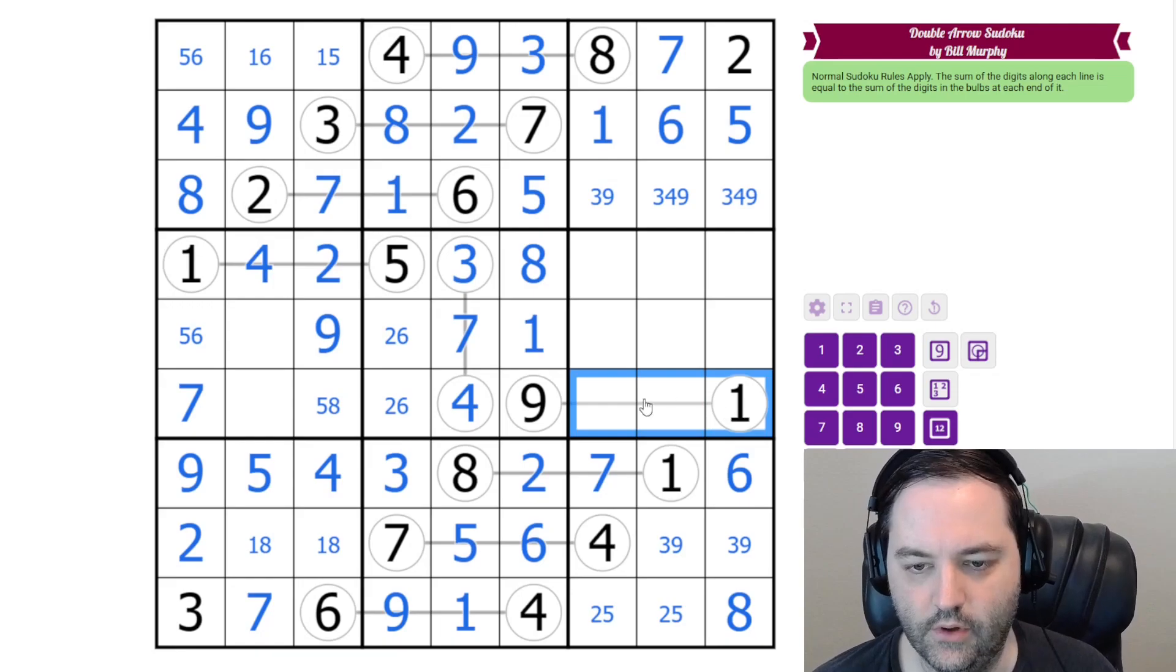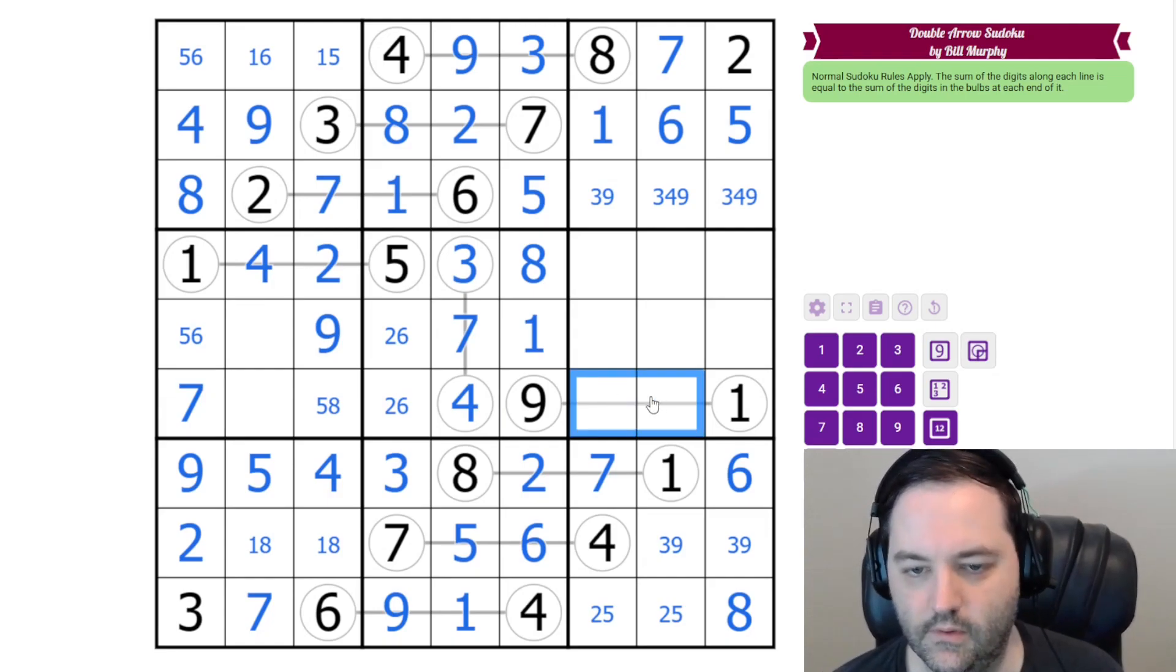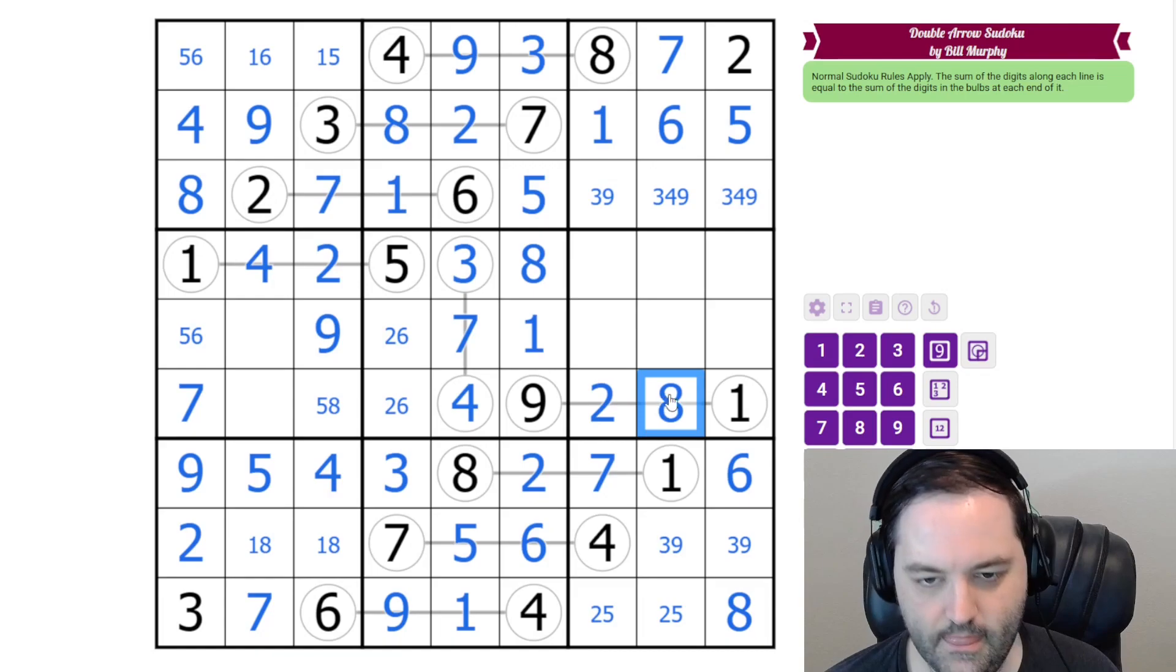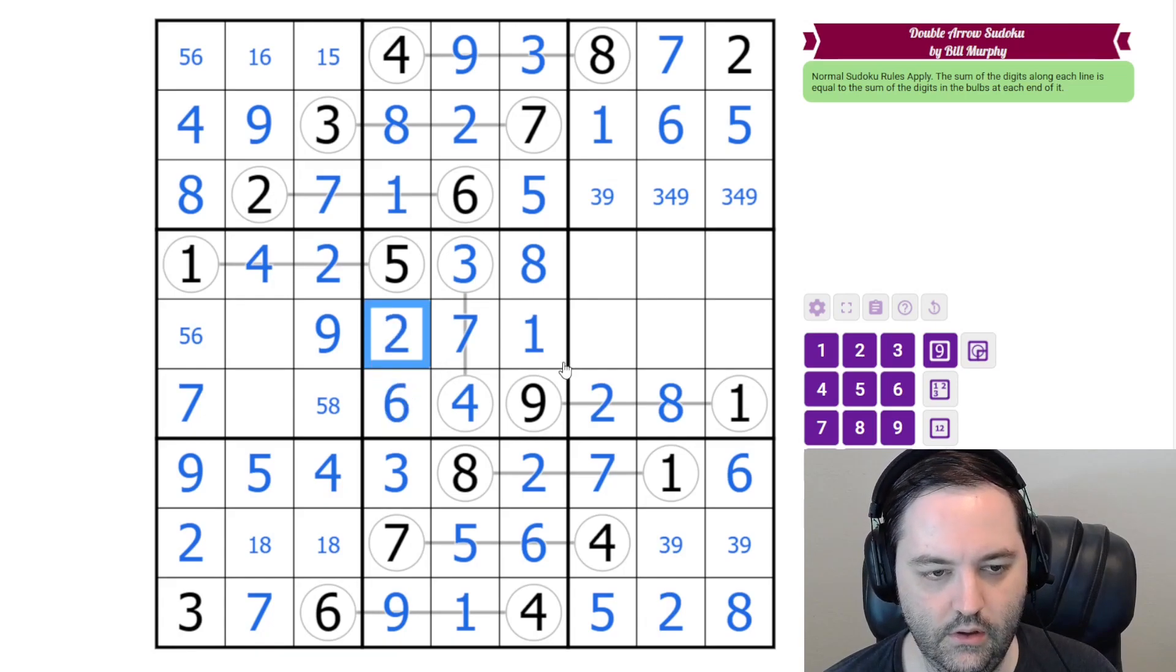But now that we have the 7, we can finally resolve our other line. We can't have 1, 9. We can't have 4, 6. And now we can't have 3, 7. So this has to be 2, 8. There's an 8 at the top. That resolves that. The 2 disambiguates 5, 2. We need 3, 6, 9 in this column. The 2 resolves the 6, 2 here.